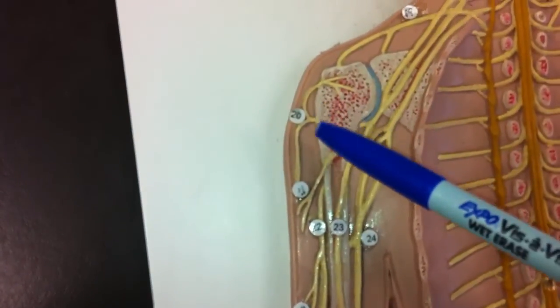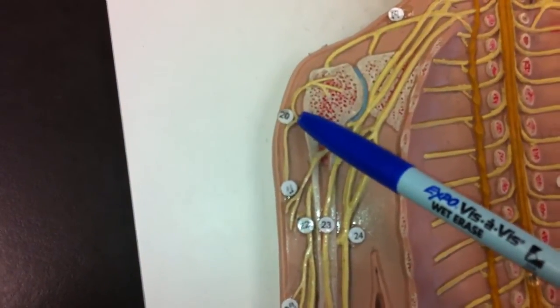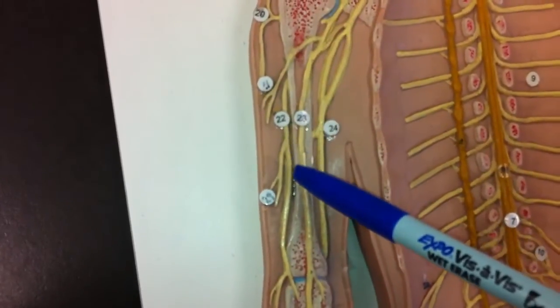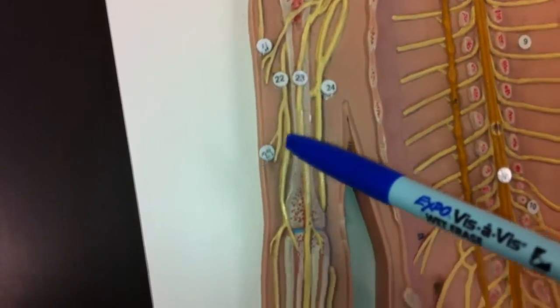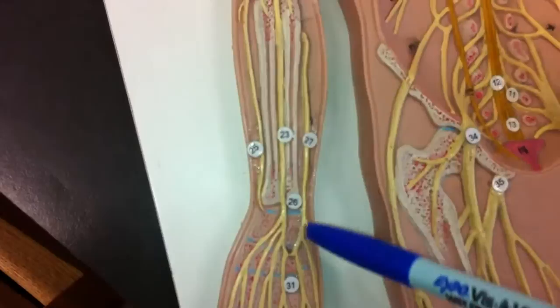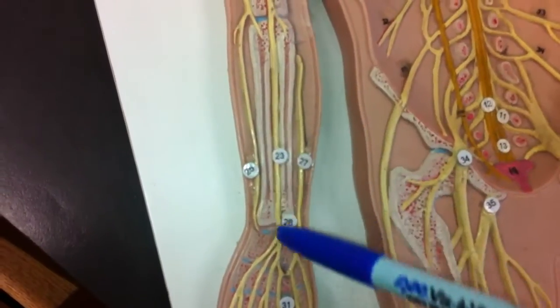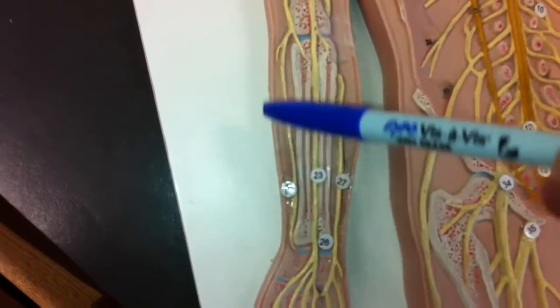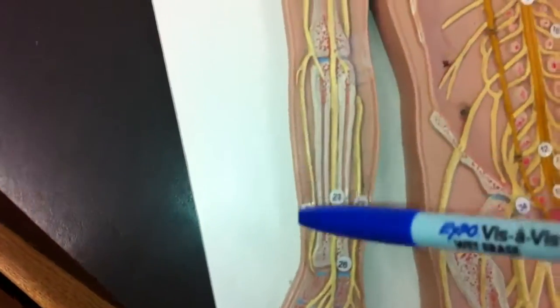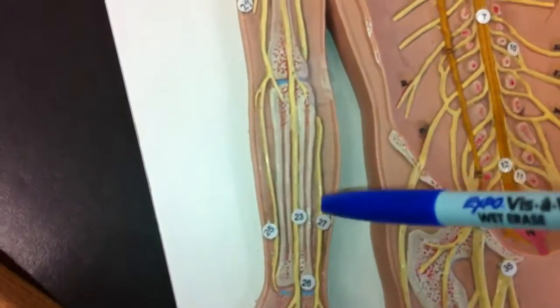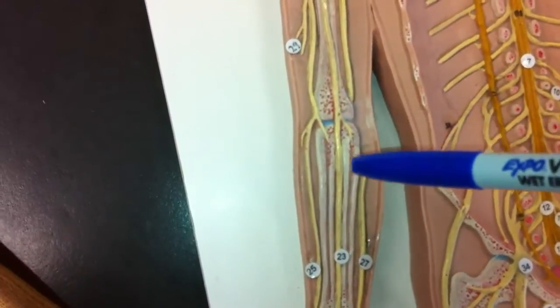Then we have the axillary nerve, we have the musculocutaneous. The median nerve will be down the middle in the carpal tunnel. We have the radial on the thumb side, and then you can see the ulnar that goes behind here by the funny bone.